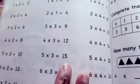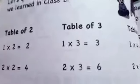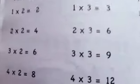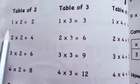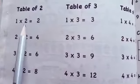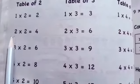First of all we are going to revise the tables. We'll start from the beginning again. Open your page number seventy six. First of all we'll do the table of two, then three and four.